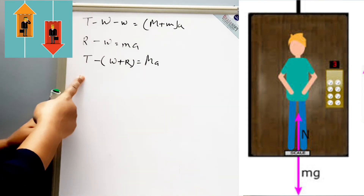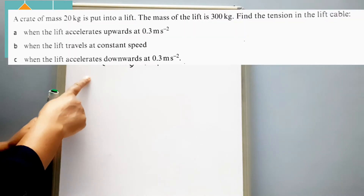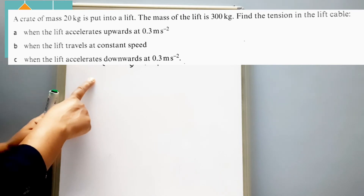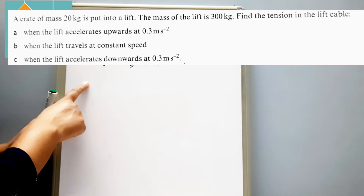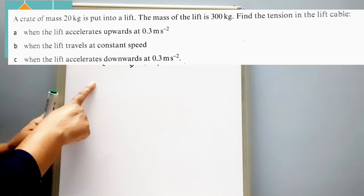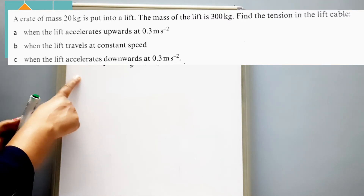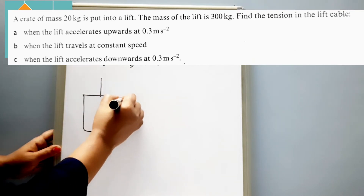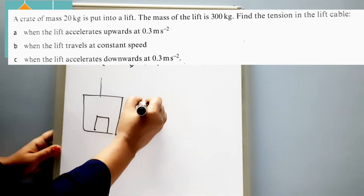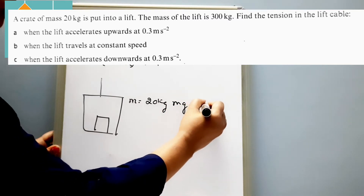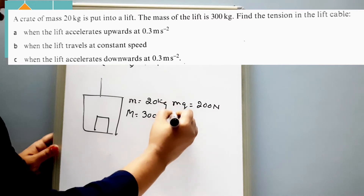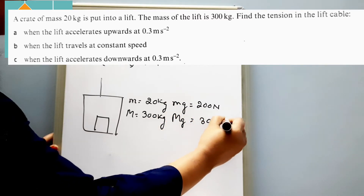Now we are going to see one sample question. A crate of mass 20 kg is put into a lift. The mass of the lift is 300 kg. Find the tension in the lift cable in three situations: when the lift accelerates upward at 0.3 m/s², when the lift travels at constant speed, and when the lift accelerates downward at 0.3 m/s². We will draw a diagram — this is our lift with the crate inside. Mass of the crate, small m, is 20 kg, so mg equals 200 N. Mass of the lift, capital M, is 300 kg, so Mg equals 3000 N.